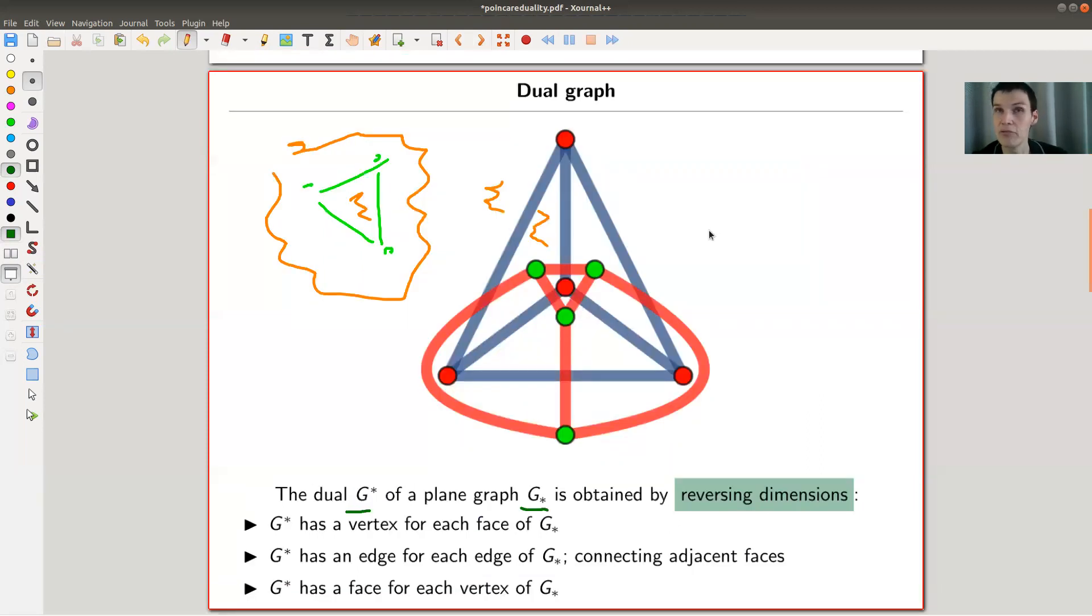So for each, the dual graph is the red one here, so for each face of the original graph, I draw a vertex, and for example, this one is one, the green ones are ones, and for each edge, I draw an edge, so kind of going orthogonal to the one. So here's a red one, and I connect them whenever those edges are separating faces in the original graph.